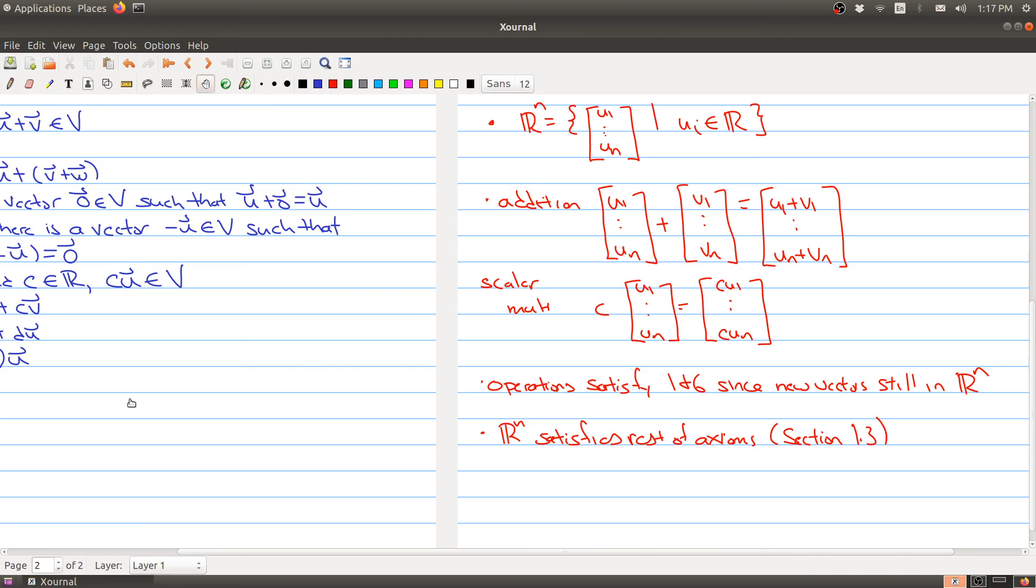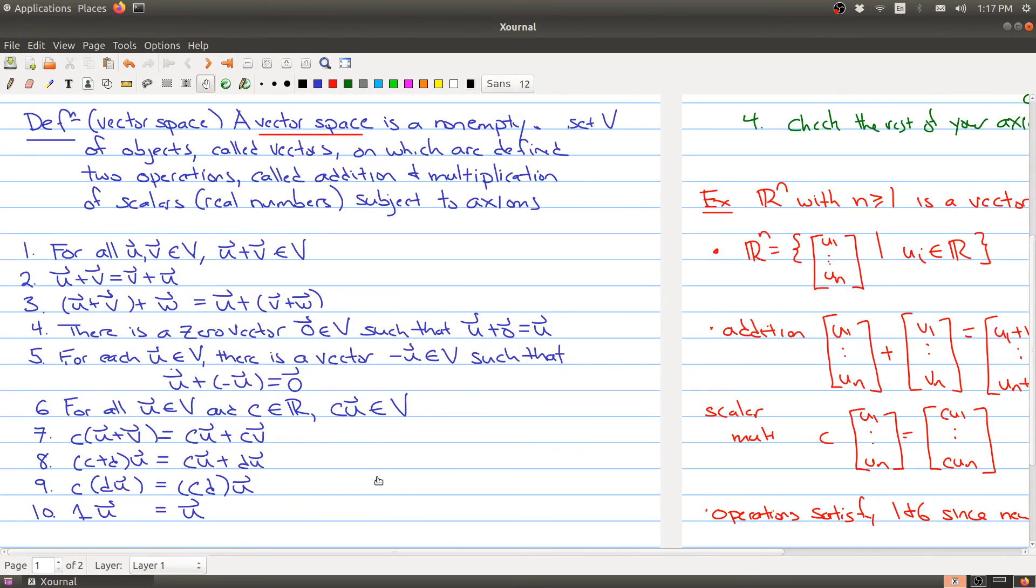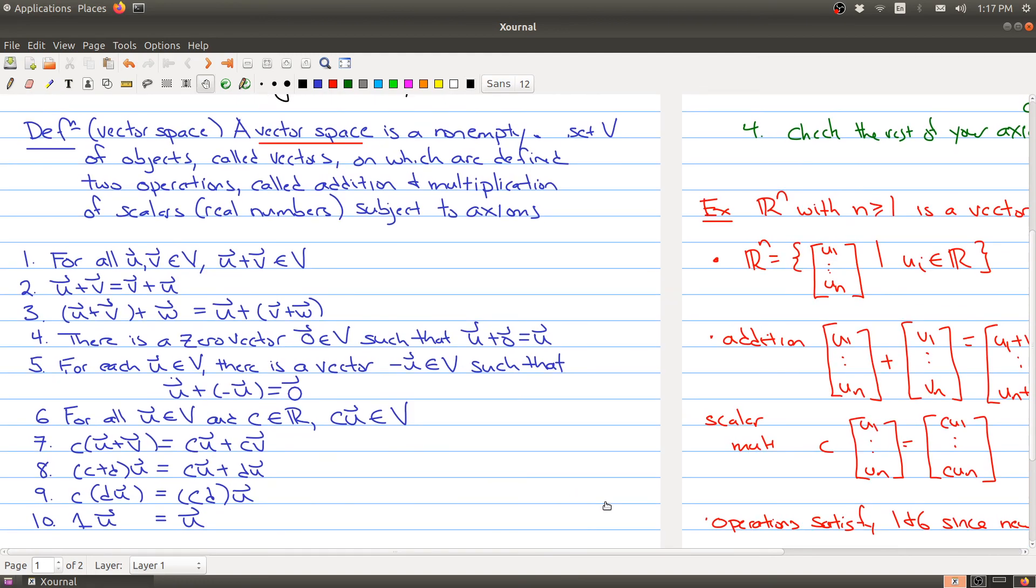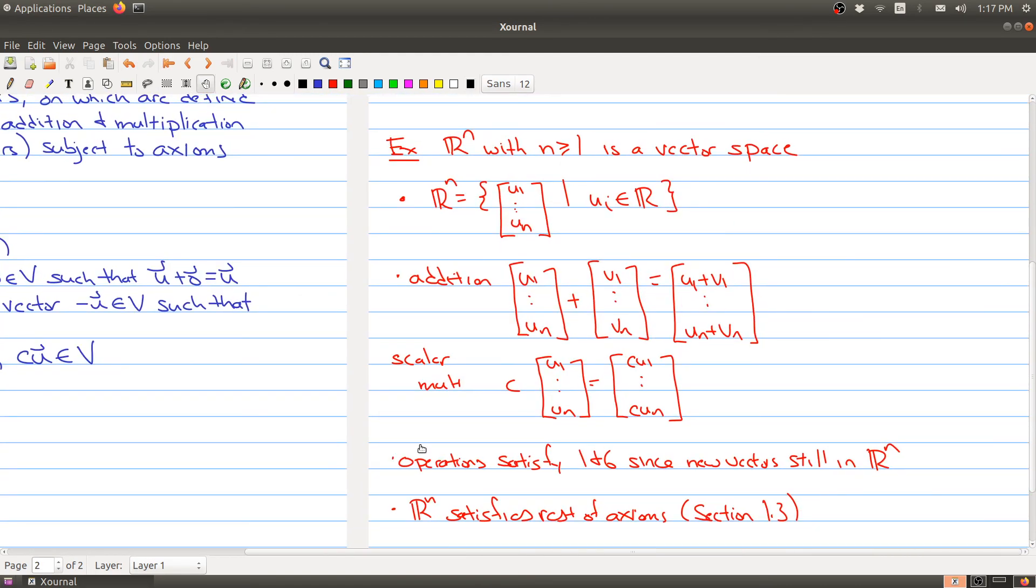If you go look at section 1.3, you will see a statement about Rn. And it's saying that the vectors satisfy all of these properties. So your standard example of a vector space is Rn. And we'll take a little break here. And after the break, I'm going to give you kind of some other examples of vector spaces.